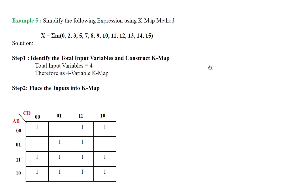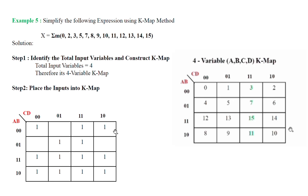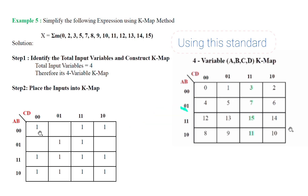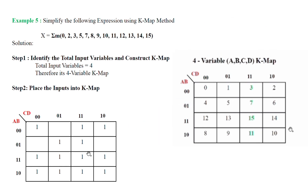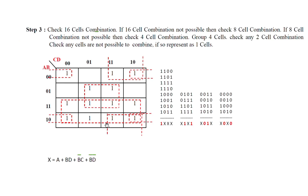Now we can work through the example. First, mark the 16 cells. Then, for all the given minterm values, map a 1 into the corresponding cell — for 0, map 1; for 2, map 1; and likewise for all minterms. This is step 2. In step 3, we have to group all the 1s. After grouping, we find variable groups in terms of powers of 2: you can group as 2, 4, 8, or 16.